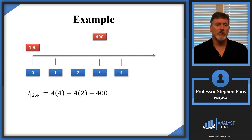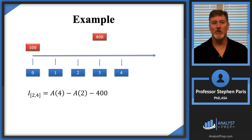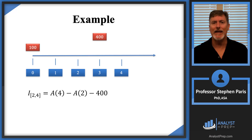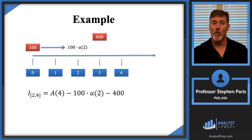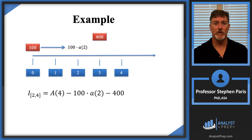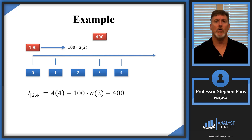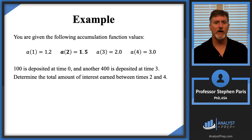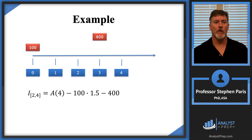The amount at time 2 is straightforward: the $400 deposit at time 3 wasn't in the account yet, so it adds nothing to the value at time 2. At time 2, all that was in the account was the accumulated value of the $100 deposited at time 0. That $100 accumulates to 100 × A(2). Since A(2) = 1.5, the amount at time 2 is 100 × 1.5 = 150.